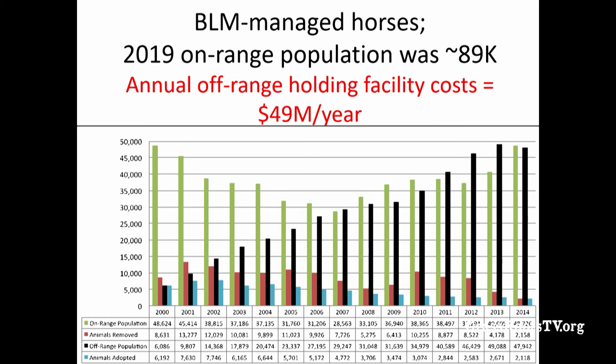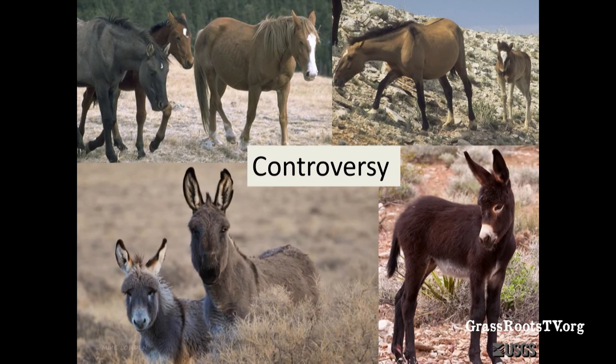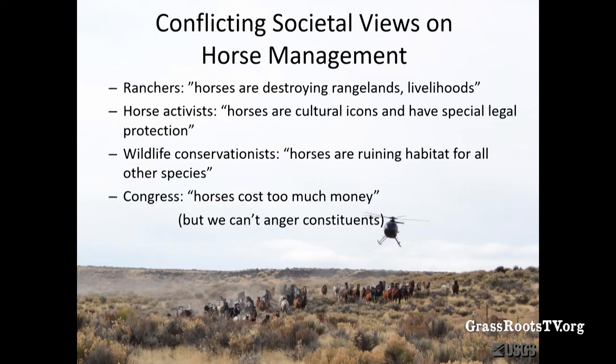For horses rounded up and put into holding facilities or pastures, BLM contracts with private landowners to house horses on their land, paying them to feed the animals. Those costs today are $49 million every year — that's what we pay for all the horses removed from the range that don't have homes. This is very controversial, and it has to do with conflicting societal views on horse management. Ranchers say horses are destroying rangelands and livelihoods, and that is true. I have been there when a rancher drove up with cattle and said there's nothing for them to eat, even though they had a grazing permit.